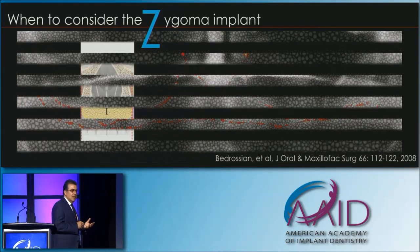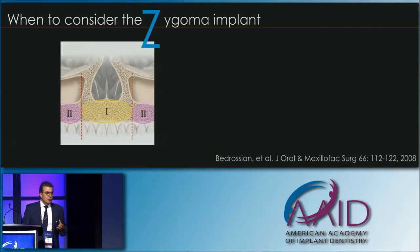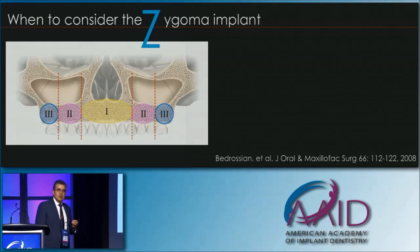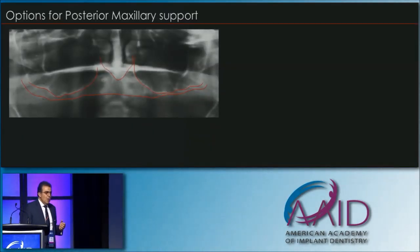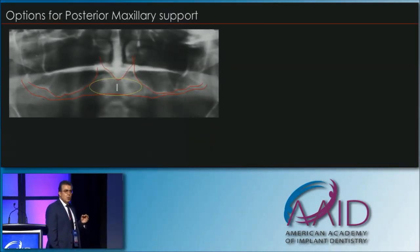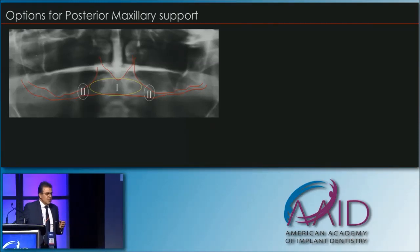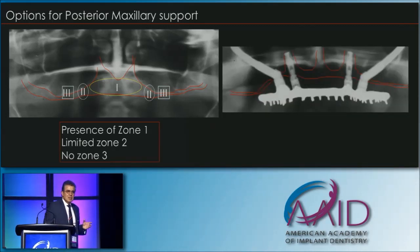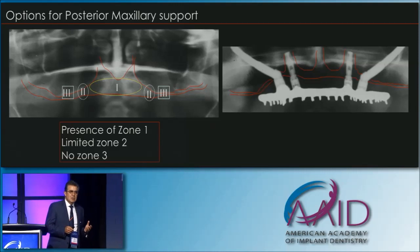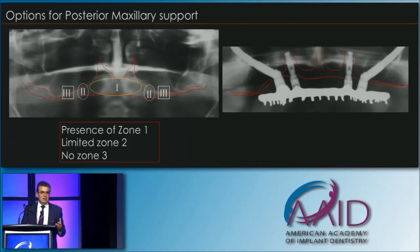So when do we consider this implant? We divide the maxilla into zones for better communication purposes. Zone one is the cuspid area, zone two is the bicuspid, and zone three is the molar region. When the patient has bone only in zone one — cuspid to cuspid — and is lacking zones two and three, that is when you consider the zygoma implant. The final prosthesis fabricated is a fixed hybrid prosthesis, because we intend to internally load the bone and thereby maintain whatever is left of the alveolus.